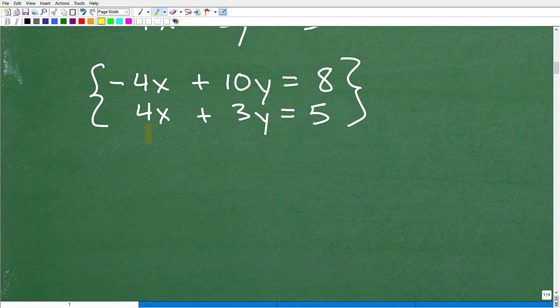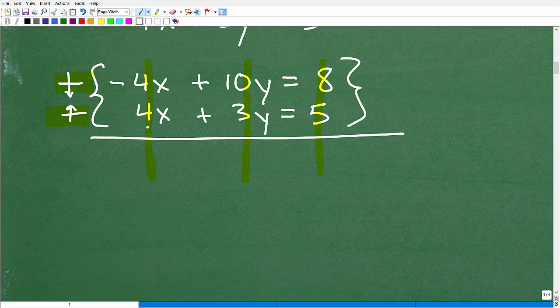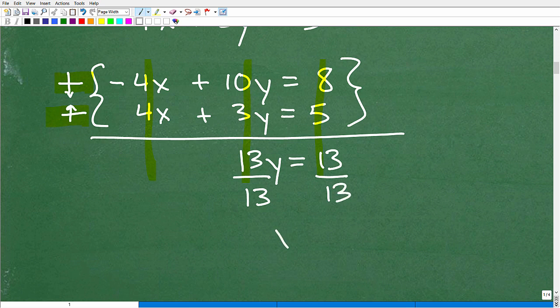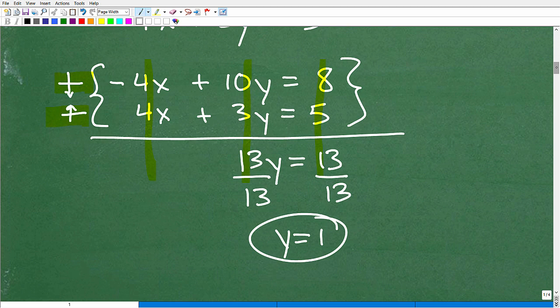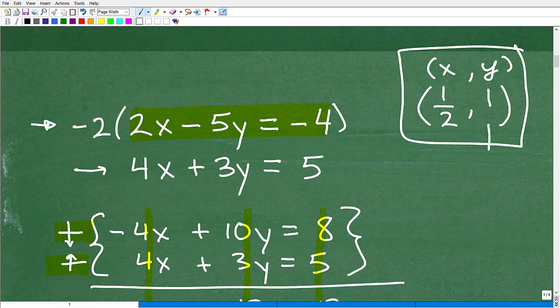The elimination method means that we want to try to eliminate one variable, and we do that by what we call a linear combination, which is like creating a sandwich. You're going to take this guy and this guy, and you're going to smush them down into one another, and we're going to create one equation. The objective is to try to get rid of one of the variables. When I add down, look, negative 4X plus 4X, that goes away, zero. I have 10Y plus 3Y is 13Y, and 8 plus 5 is 13. So 13Y equals 13. I can easily solve this equation for Y. I just divide both sides of the equation by 13, and I get Y is equal to 1.